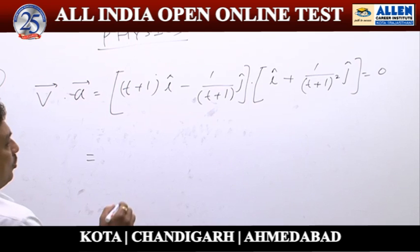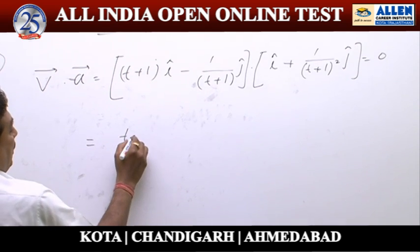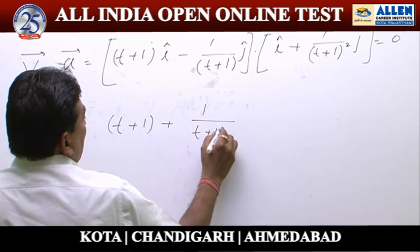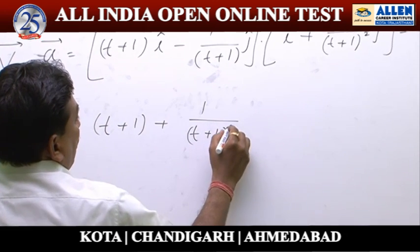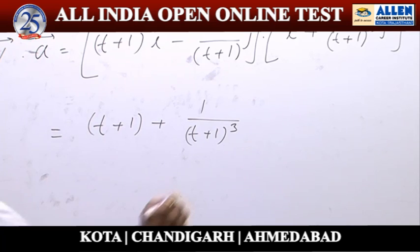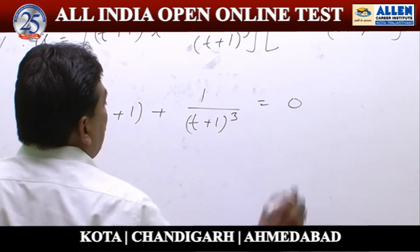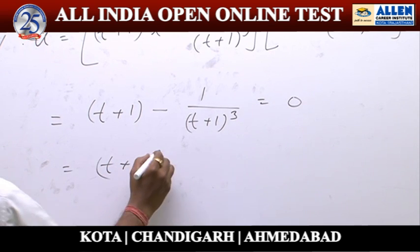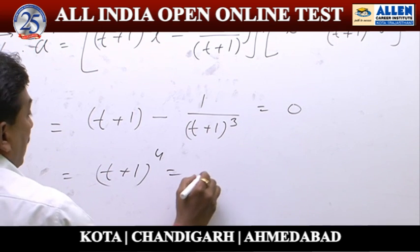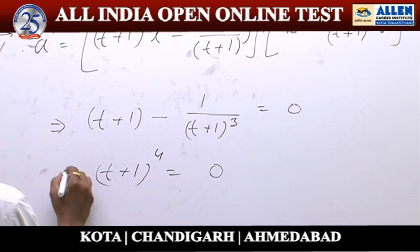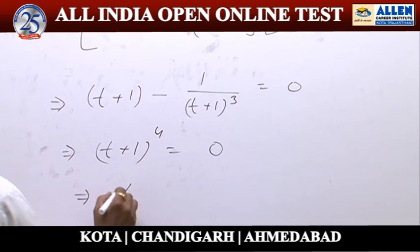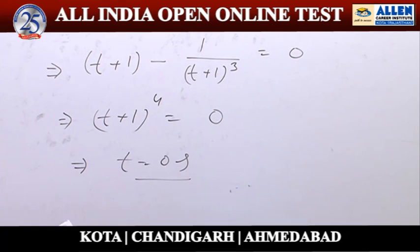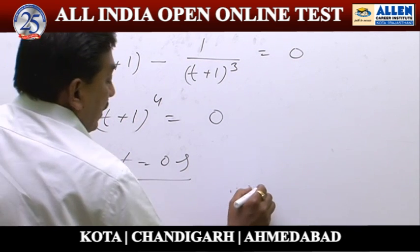That equals (t plus 1) upon (t plus 1) cubed, which must equal 0, giving (t plus 1) to the power 4 equal to 0, implying t equal to 0 seconds. So option 1 is the correct answer.